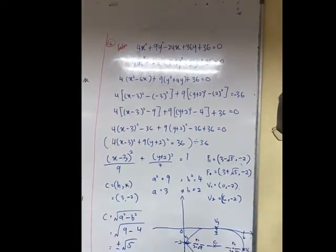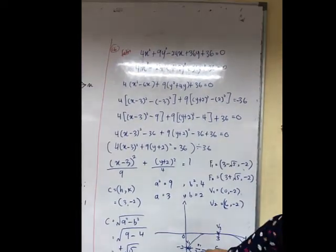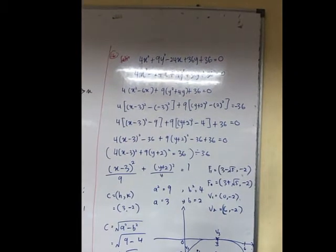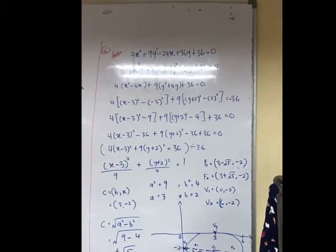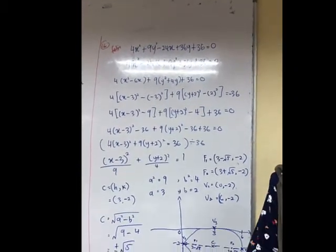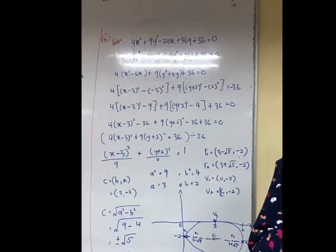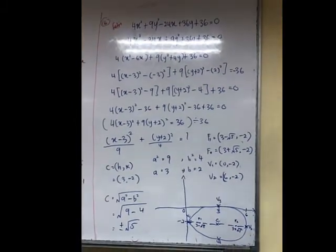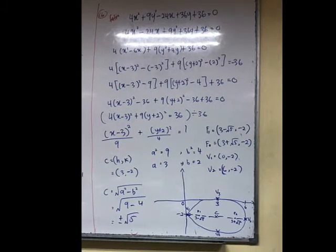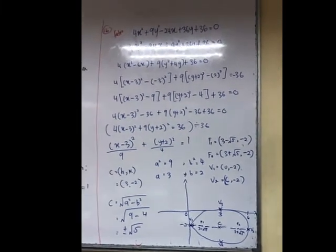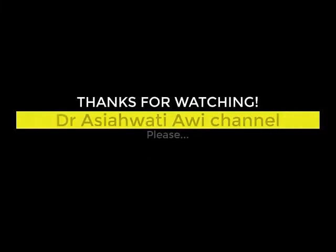So we draw the ellipse. Here the center (3, -2), the V1, V2, F1, F2. So actually you can take all the info for foci from the sketch. You have to remember all the formulas.